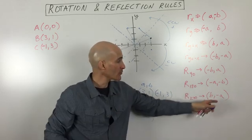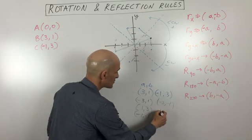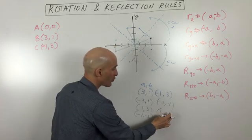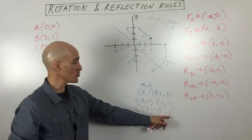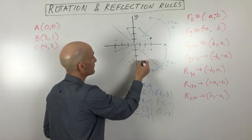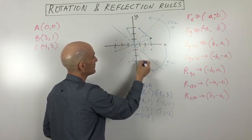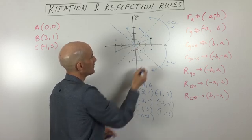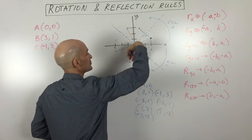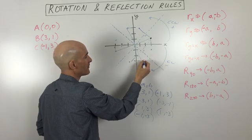For 270 degrees, you switch the x and y coordinates again, but this time you make the new y-coordinate the opposite sign. So switching (3, 1) gives (1, 3), and making the new y negative gives (1, -3). Looking at the triangle illustration, rotating 90, 180, 270 degrees — you can see right there the location of your new point.